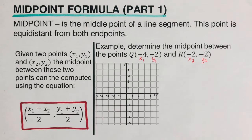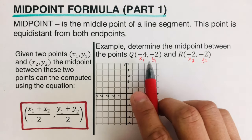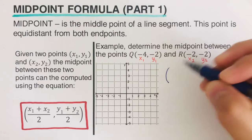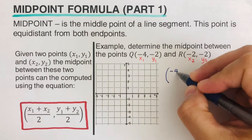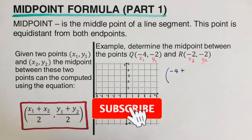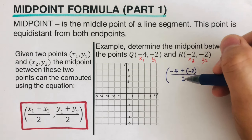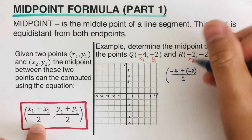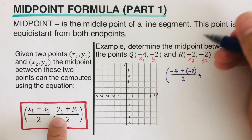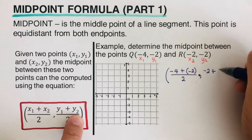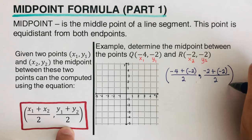The second step is to plug these values into the midpoint formula. So x₁ is -4, plus x₂ which is -2, and that whole thing is divided by 2. Then for the y-values: y₁ is 2, plus y₂ which is -2, and that is divided by 2. Then we close the parentheses.